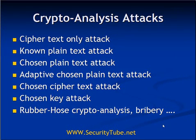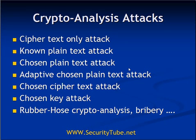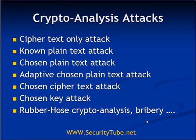These are the possible attacks on cryptography. Let's list all the attacks one by one, and then I will explain every attack in detail in the next slides. The attacks can be: ciphertext-only attack, known plaintext attack, chosen plaintext attack — the meaning of each is very intuitive from the name itself. Next is adaptive chosen plaintext attack, then chosen ciphertext attack, chosen key attack, and lastly rubberhose cryptanalysis or bribery, etc.